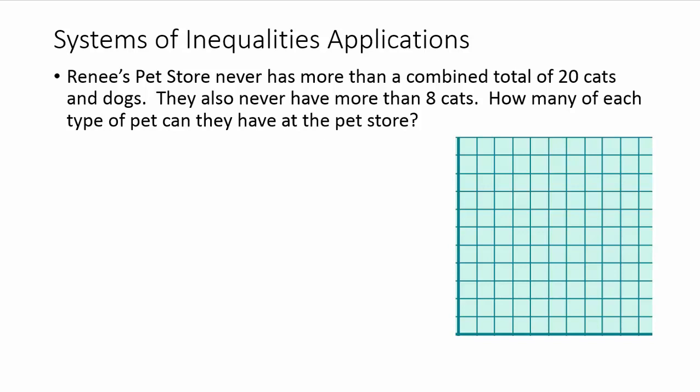We'll start with this first one. Renee's pet store never has more than a combined total of 20 cats and dogs. They also never have more than 8 cats. How many of each type of pet can they have at the pet store?